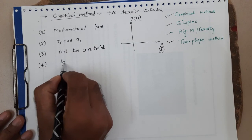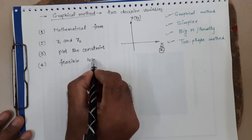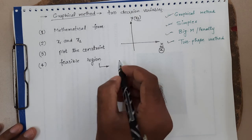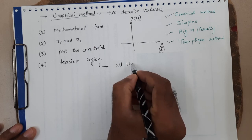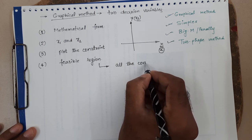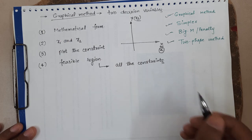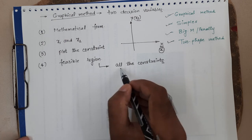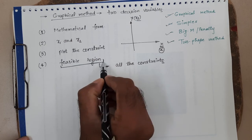Fourth, we look for the feasible region where our solution will lie. This feasible region should be such that it simultaneously satisfies all the constraints — all the constraints must be satisfied at the same time.